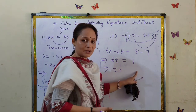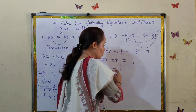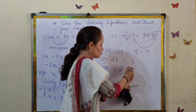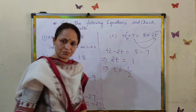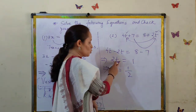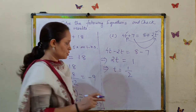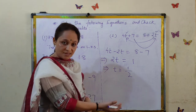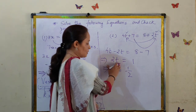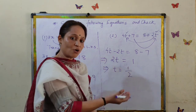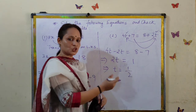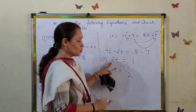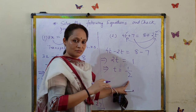Now we divide both sides by 2. When 2 moves to the other side, multiplication changes into division. So the value of t is 1 divided by 2, which is one-half.